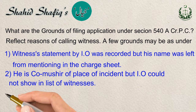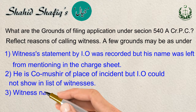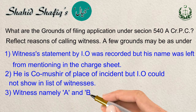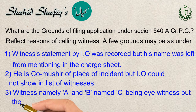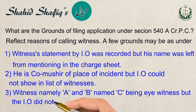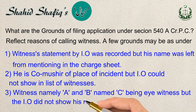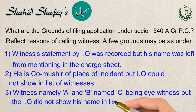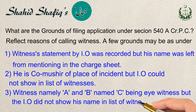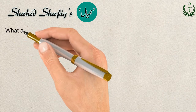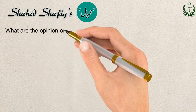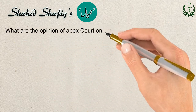Witness namely A and B named C, being an eyewitness, but the investigation officer did not show his name in the list of witnesses. What are the opinions of apex courts on this subject?